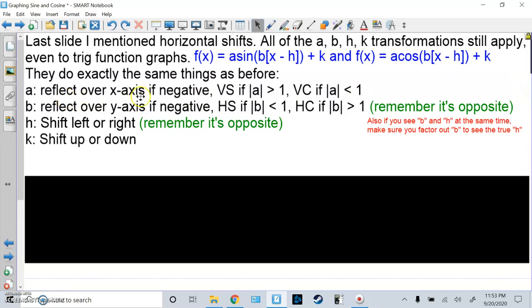a reflects over the x-axis if it's negative, so upside down. Vertical stretch if it's bigger than 1, vertical compression if it's smaller than 1. b reflects over the y-axis if it's negative. Horizontal stretch if b is smaller than 1, horizontal compression if b is bigger than 1. Again, these are the opposite. So if you see b is 2 over 3, that's a horizontal stretch by 3 over 2. h shifts left to right, again it's opposite, then k is up and down.